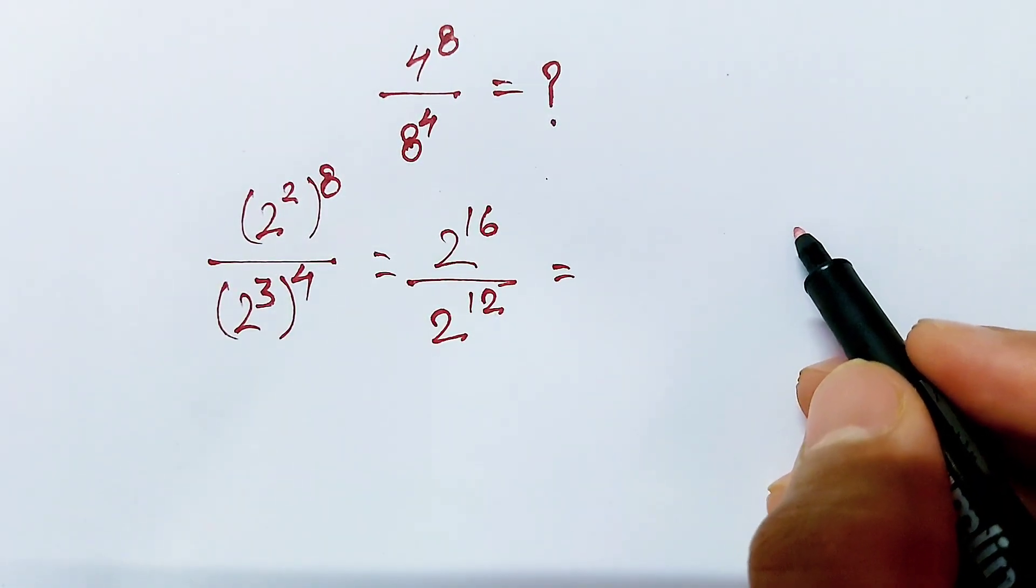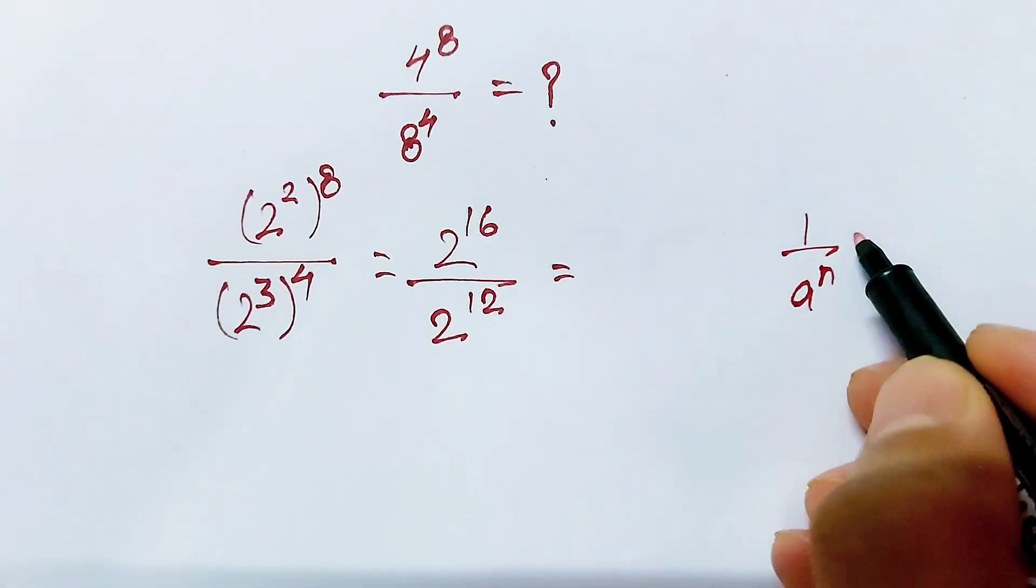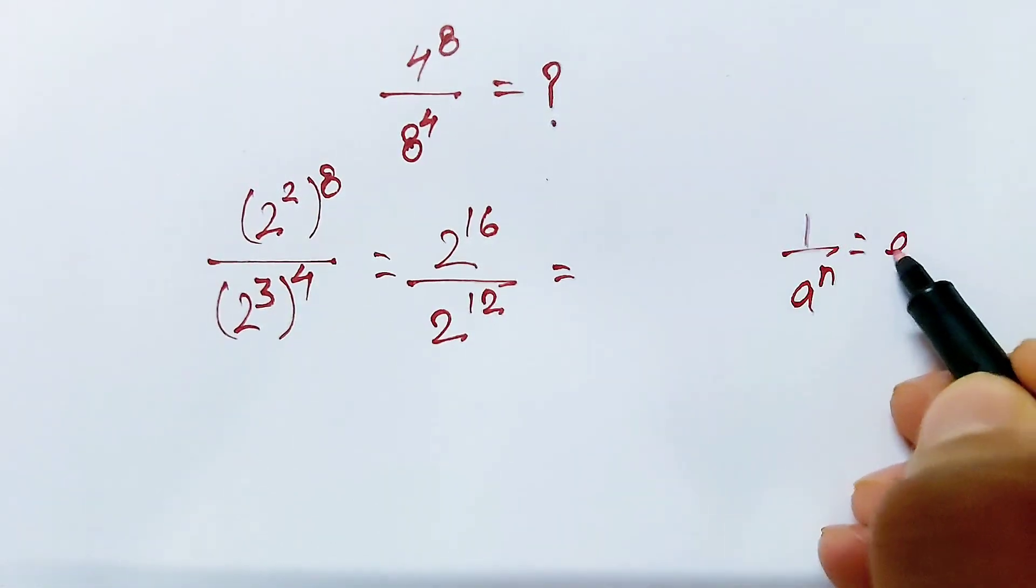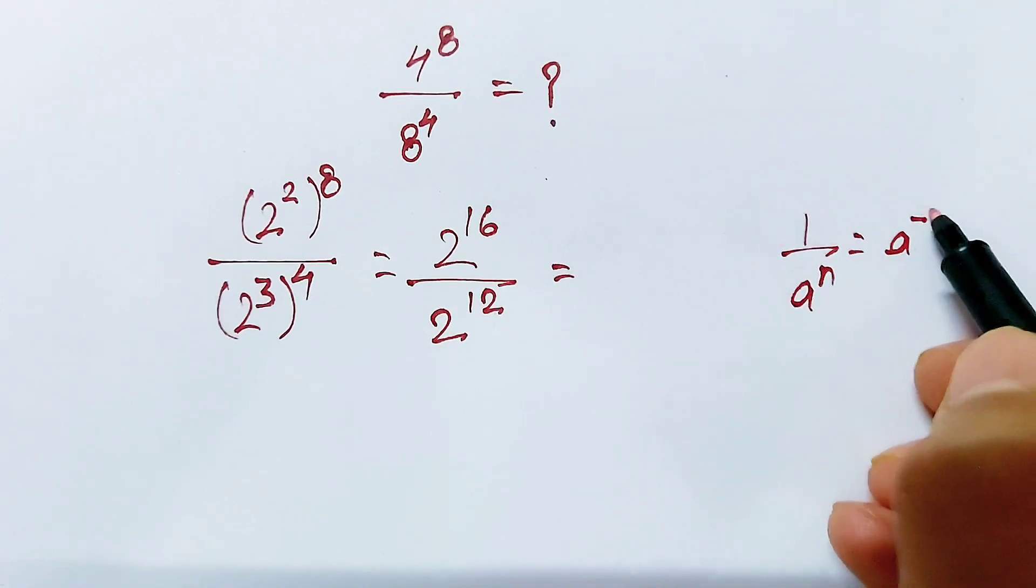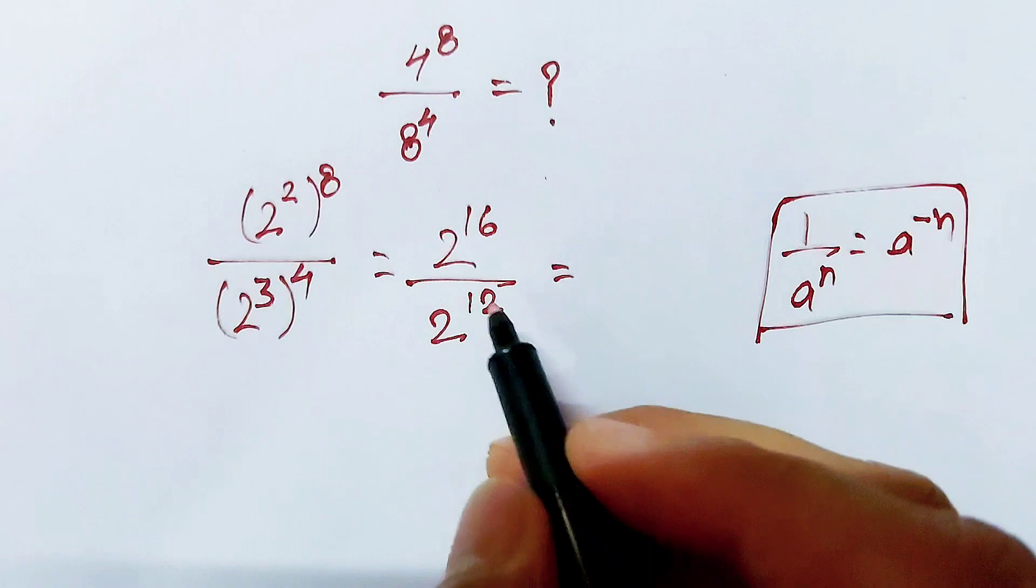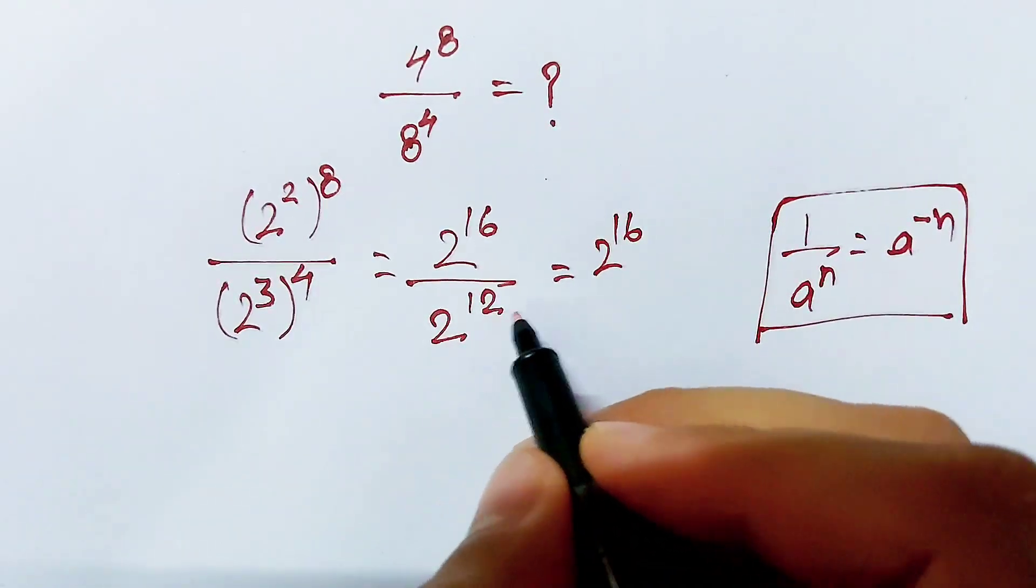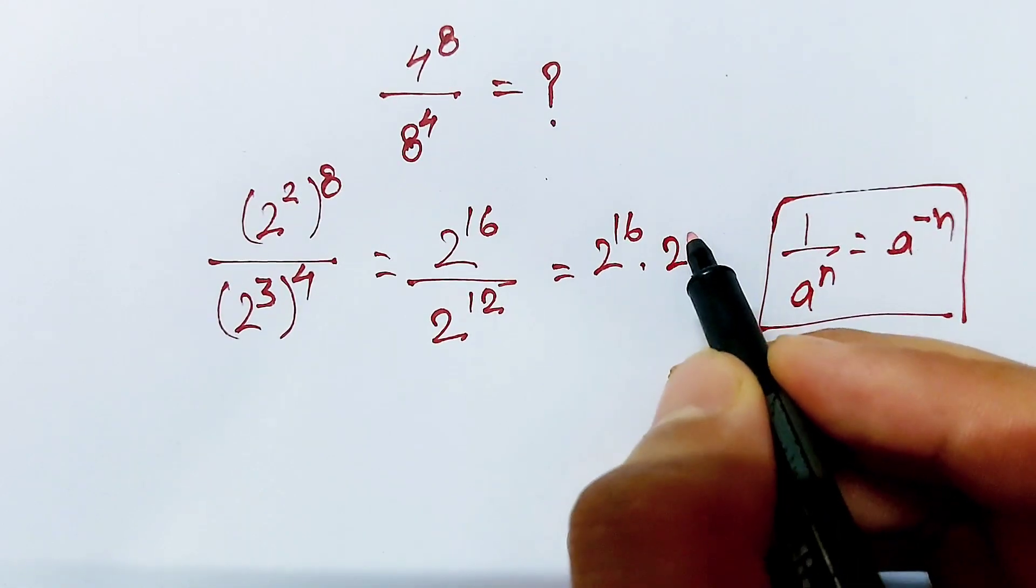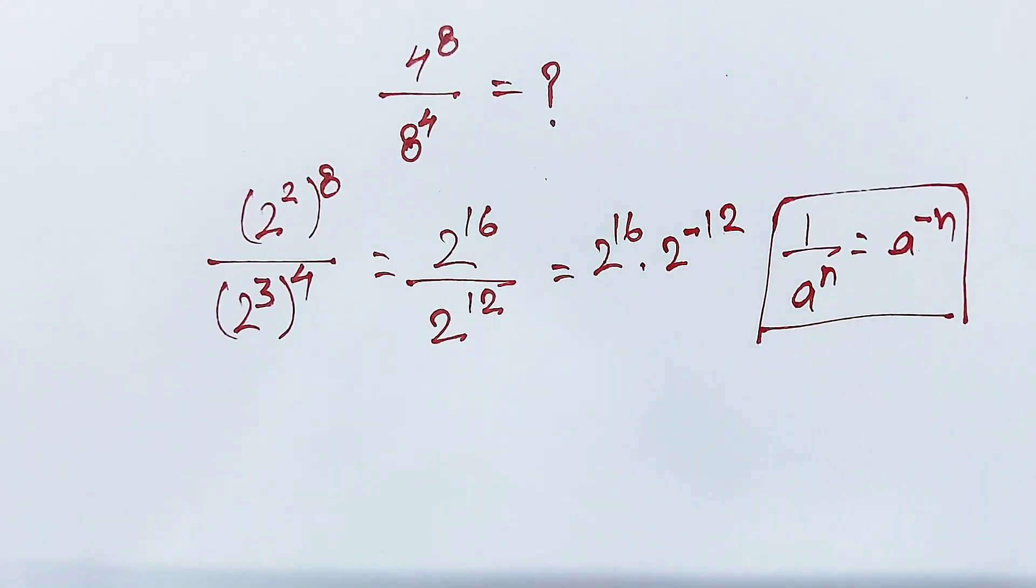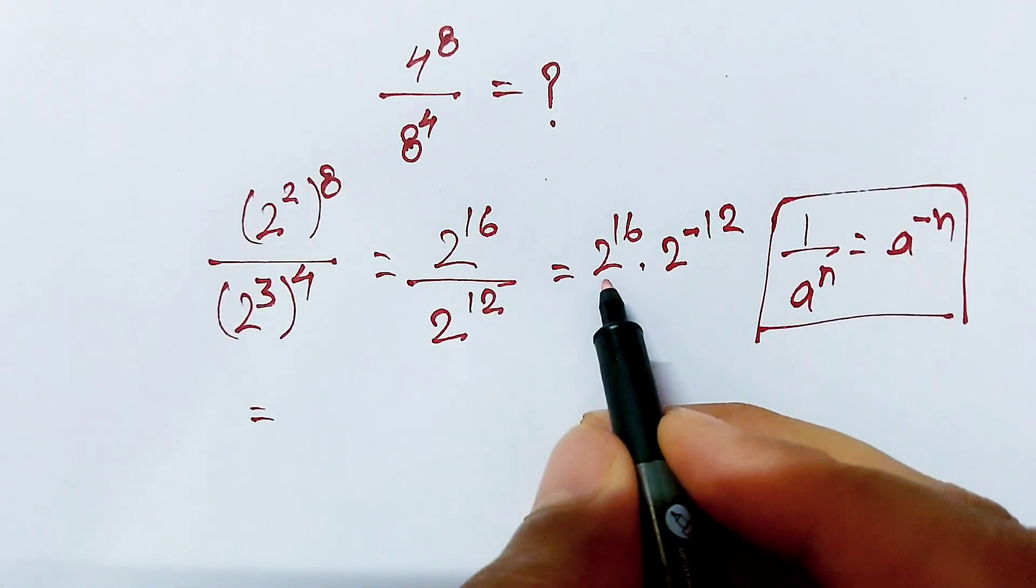Now you know this exponential property, which is 1 over a^n equals a^(-n). So applying this property here, what you get: 2^16, and this 2^12 becomes 2^(-12).